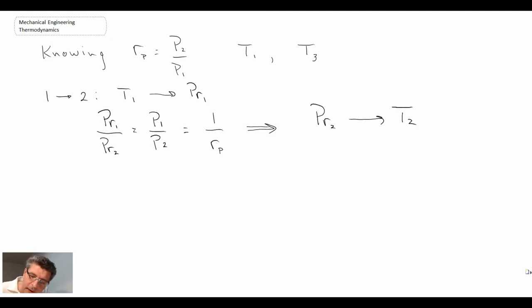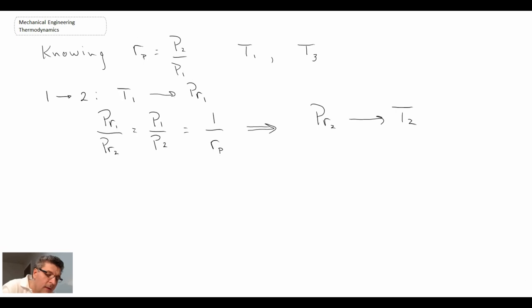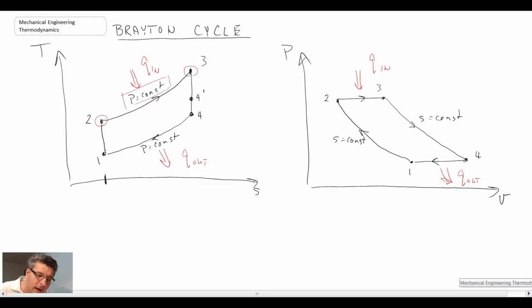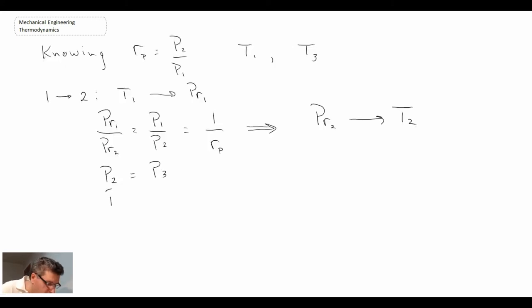So that's how you could work your way through to find temperature 2. And then looking at our process again. The other thing to notice is that when we're going through the combustion process or the heat addition. We are saying that this is constant pressure. The constant pressure process. And so we can write P2 is equal to P3. And in a like manner. We can say that the heat rejection process is also at constant pressure. And therefore P4 equals P1.